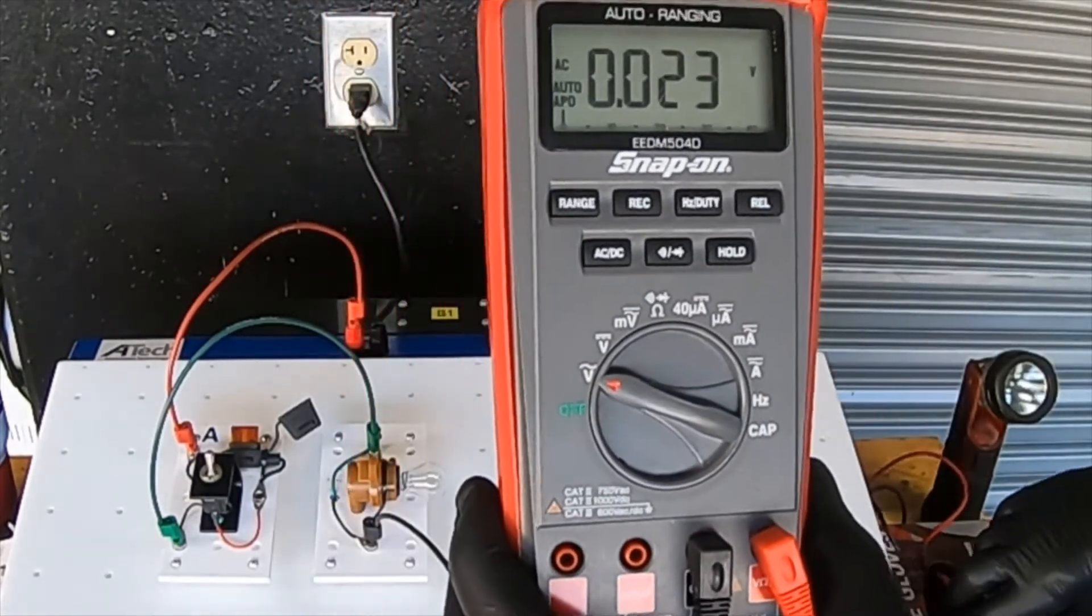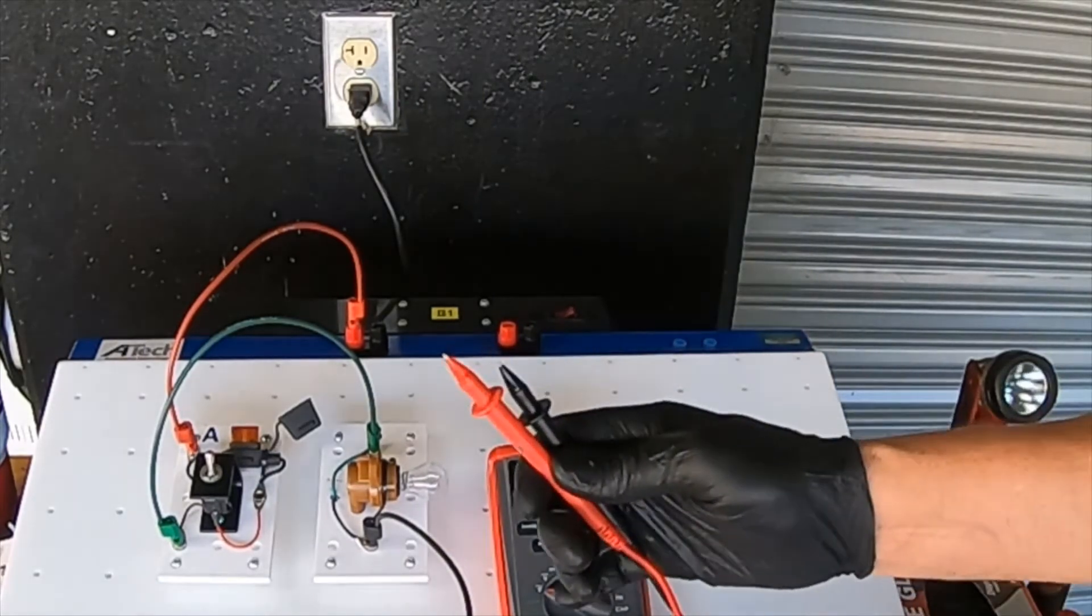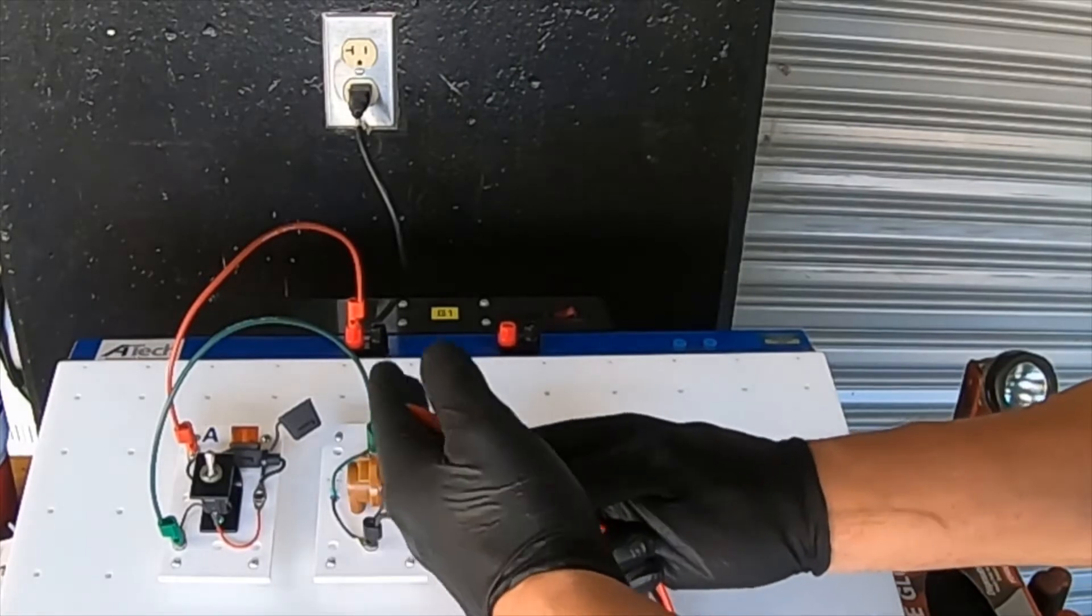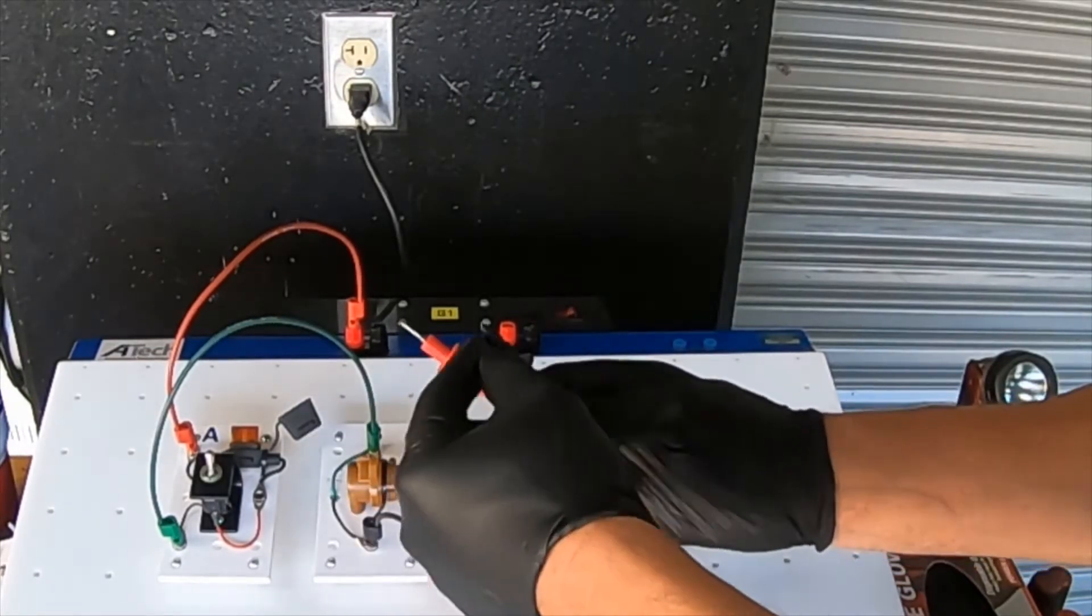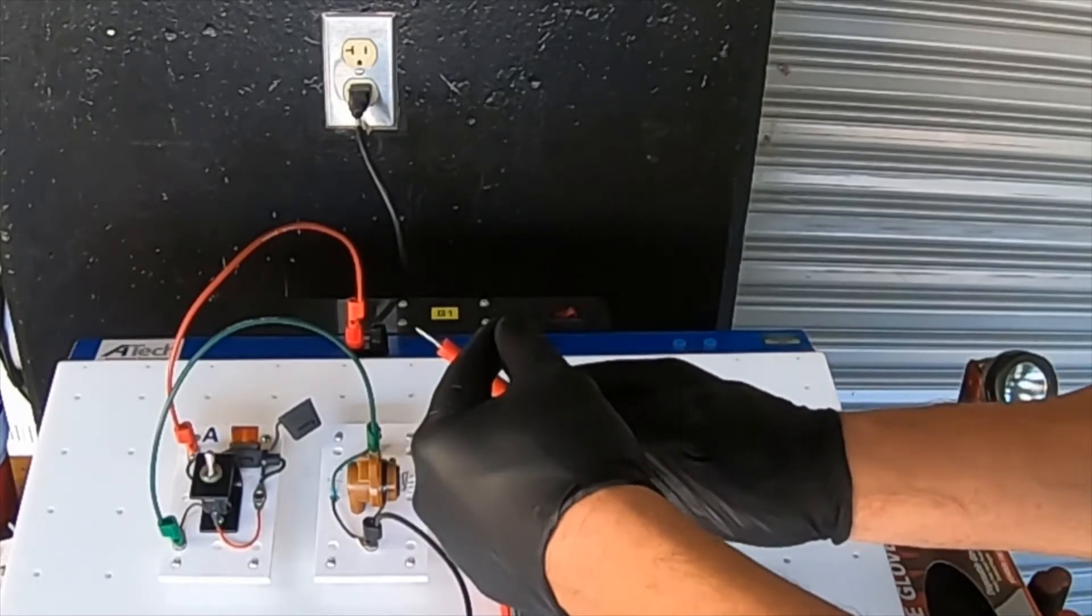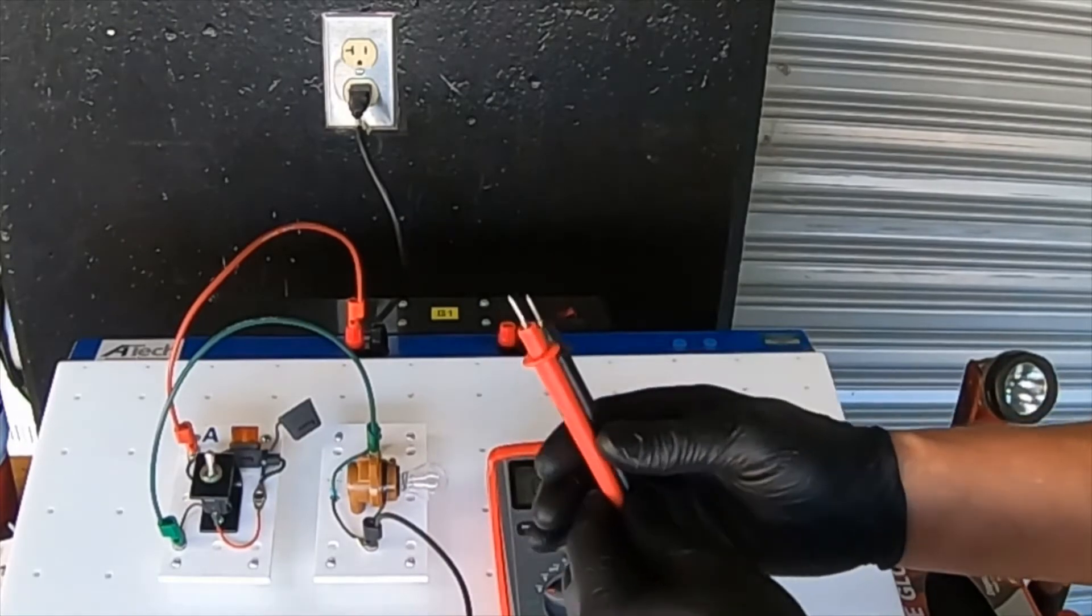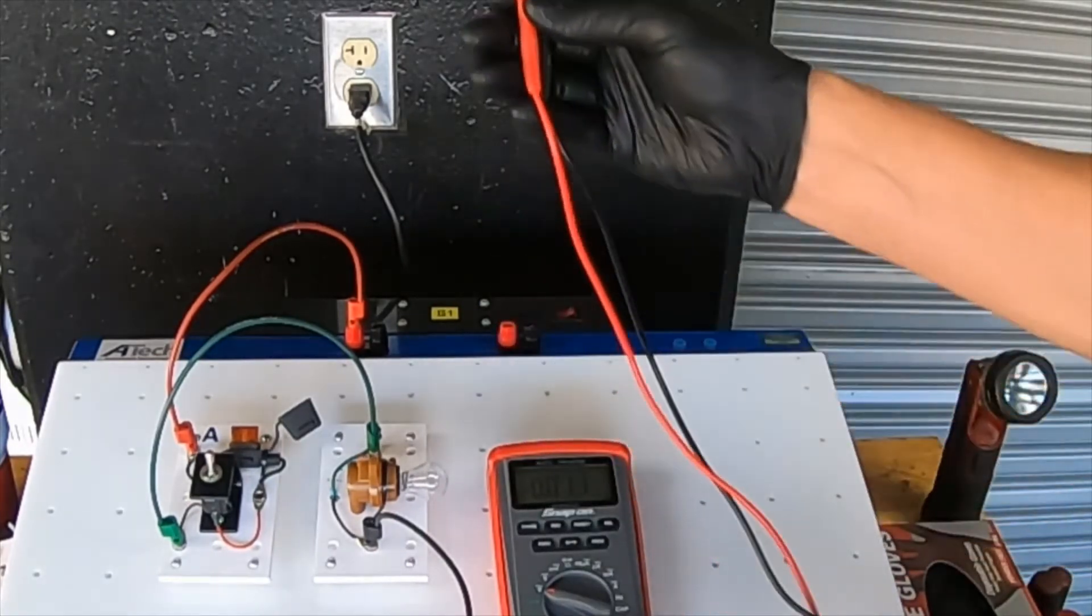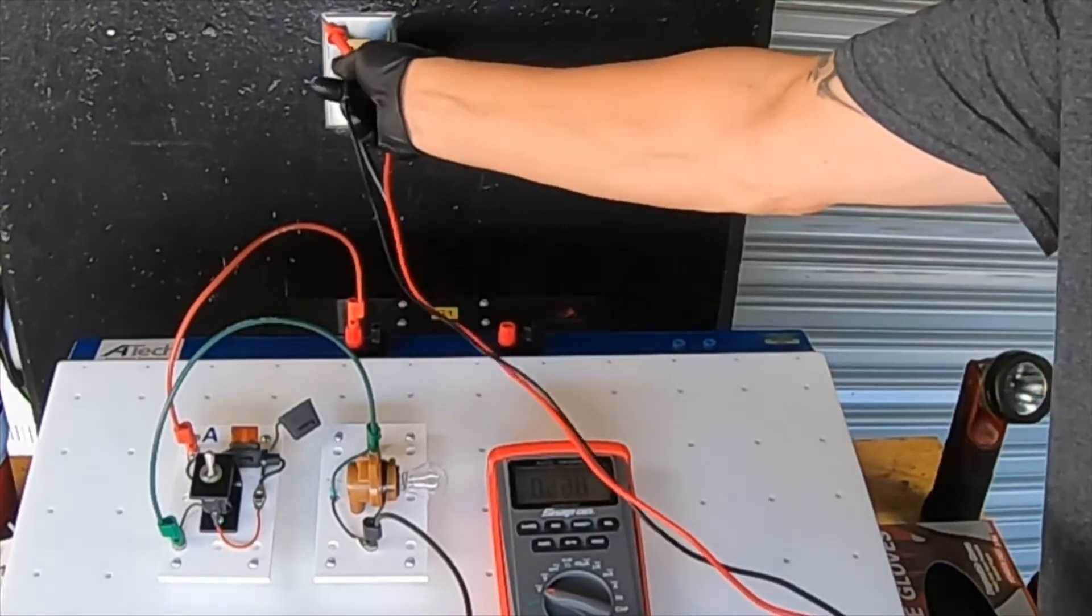Once again, this is an auto-ranging meter, so I do not have to select the correct range. The meter will do it for me. On my leads, I am going to remove my protective tips. Remember, the protective tips are an important part of the safety of this meter. And when you are using them removed, it drops the category of the meter one level. So I am now going to place the leads into the outlet.